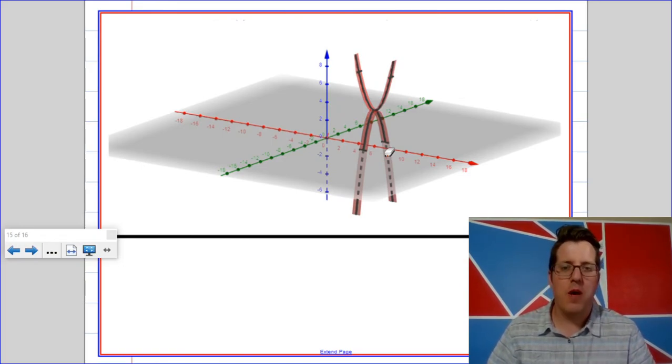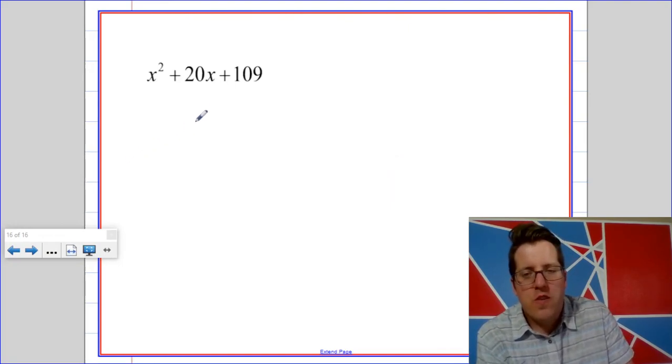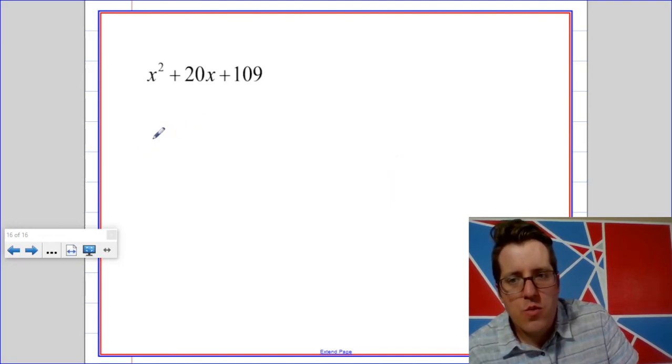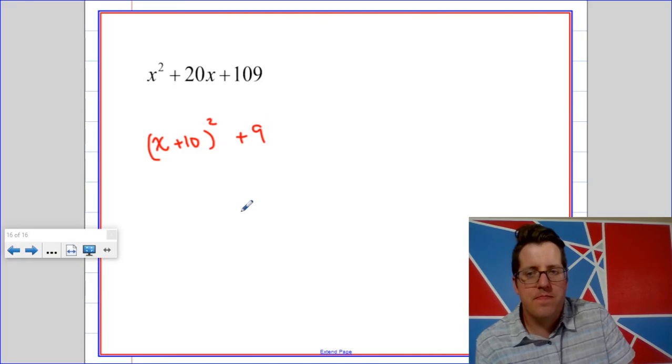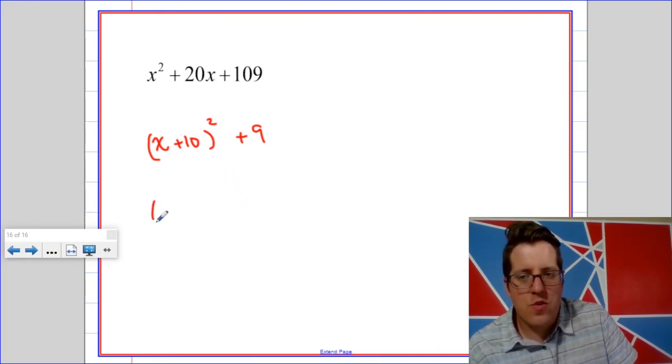All right, I'm going to give one more problem to see if we can see how it factors. It's pretty cool. If you just wanted to do this mechanically, you would say that this is x plus 10 quantity squared plus 9. And that would factor to x plus 10 plus 3i and x plus 10 minus 3i.